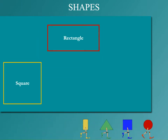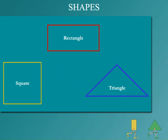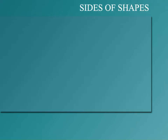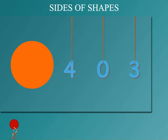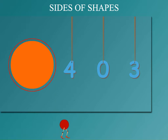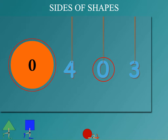Here is a yellow square, a red rectangle, and a blue triangle. Sides of shapes! Here is a circle — how many sides does it have? Four, or zero, or three? Look around. That's right, it has zero sides because it has no corners or edges.